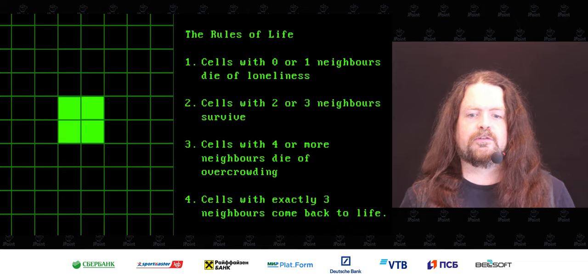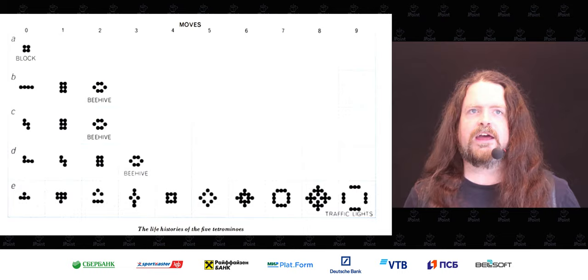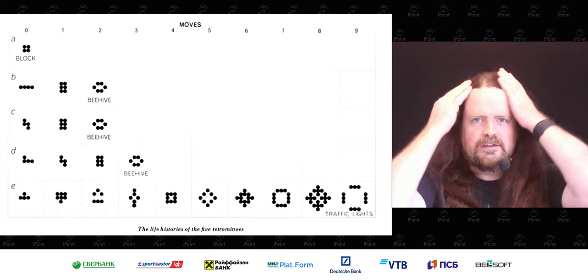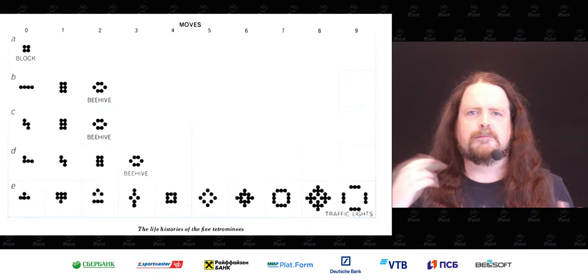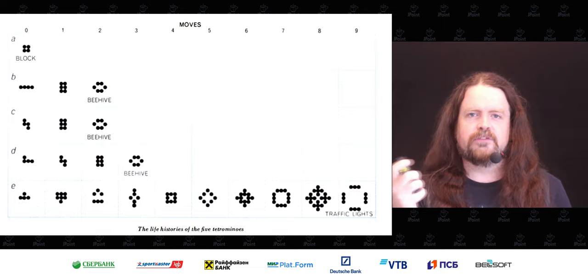What happens when we start applying those rules and iterating? When the Game of Life was first published in 1970, people had to use graph paper and pencils to explore it — things like the life histories of the five tetrominoes, watching how shapes change from one generation to the next. But studying the Game of Life with graph paper is like studying butterflies in a museum in a glass case. You see what they look like, but you have no idea how they actually behave.